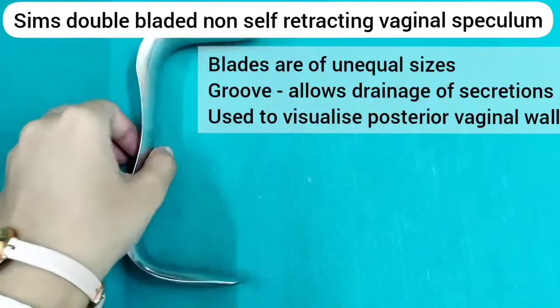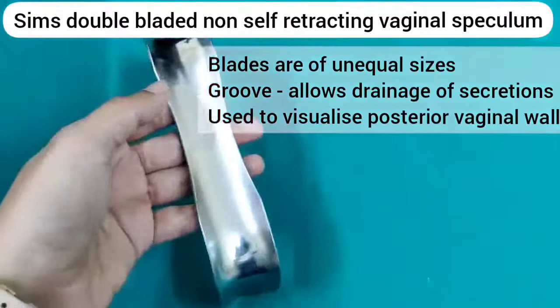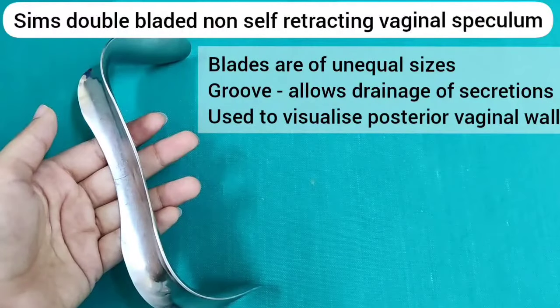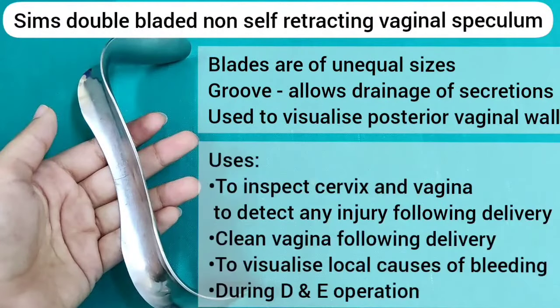It has two blades of unequal size and a groove which allows drainage of secretion. It is used to visualize the posterior vaginal wall, to inspect the cervix and vagina, to detect any injury following delivery, to clean the vagina following delivery, to visualize local causes of bleeding, and during D&C operation.